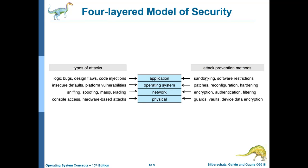For operating system security, attack types include insecure defaults and platform vulnerabilities. To prevent attacks we have patches. If your OS is original, be responsible and update it — your OS is not 100% perfect, and security loopholes can be exploited as trapdoors. It is very important to update your OS through patches, and also through reconfiguration and hardening.